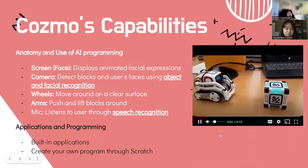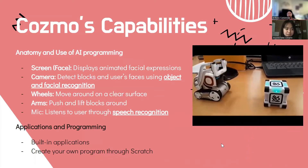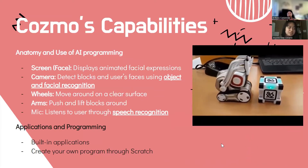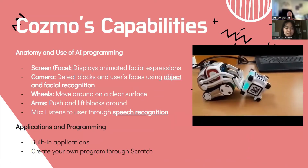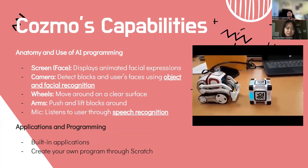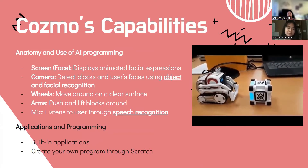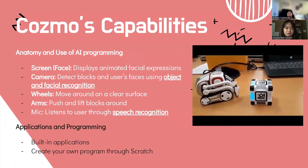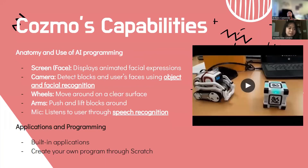In this video, you can see all of COSMO's capabilities and its use of AI programming. It has a screen or face that displays animated facial expressions, a camera that detects blocks and users' faces using object and facial recognition. It has wheels to allow it to move around on a clear surface and arms to push and lift blocks. It also has a mic that listens to users through speech recognition. Overall, it has a lot of cool built-in applications, but you can also create your own programs through Scratch.